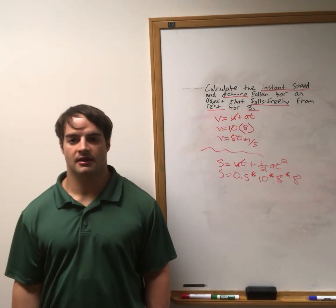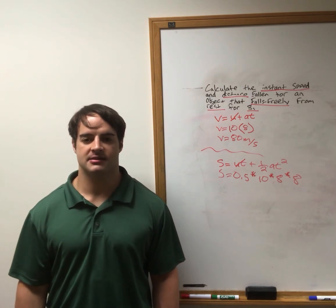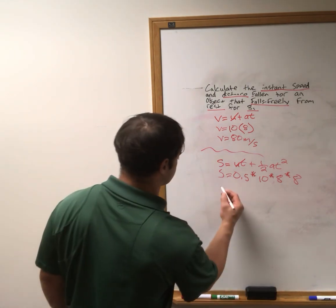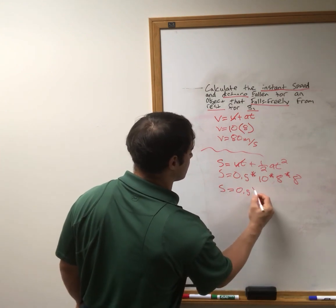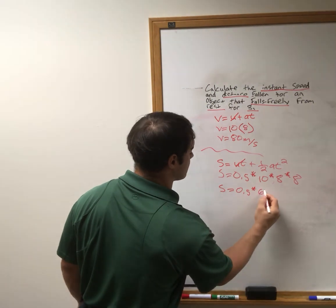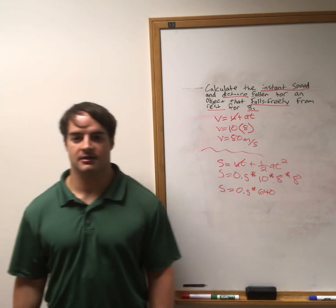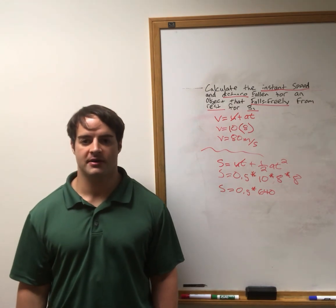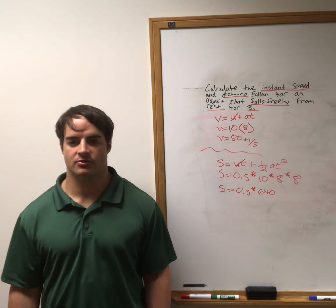Okay, eight times eight is sixty-four times ten is six forty. So the distance is point five times six forty. Okay, and you simply multiply. Point five times six forty is three hundred and twenty.